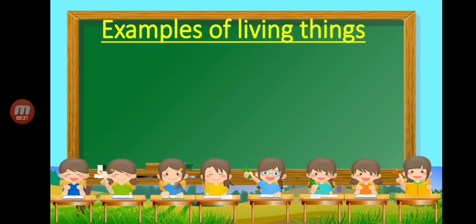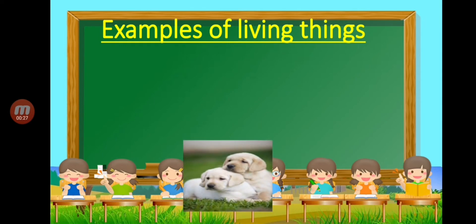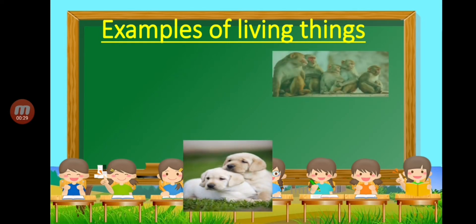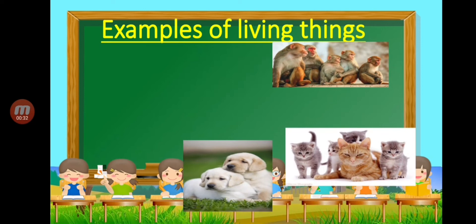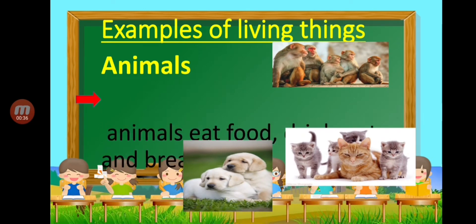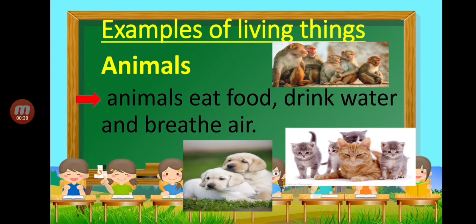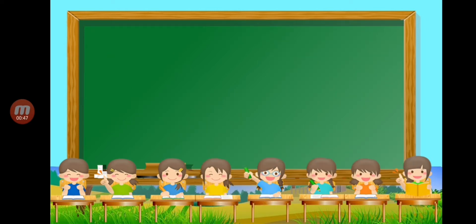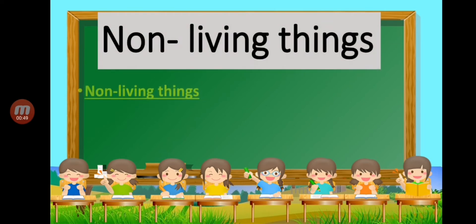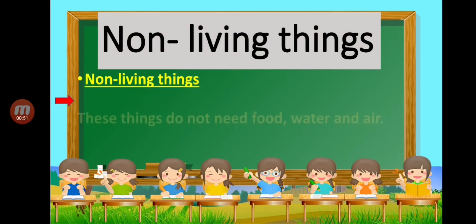We start with living things. These are some examples of living things. First: dogs, monkeys, cats — they are called animals. Animals eat food, drink water, and breathe air. That is an example of living things.